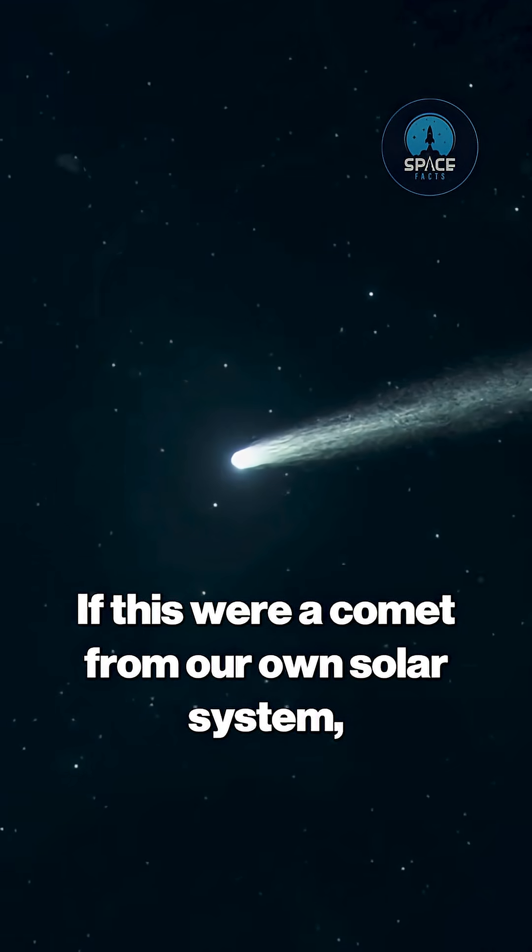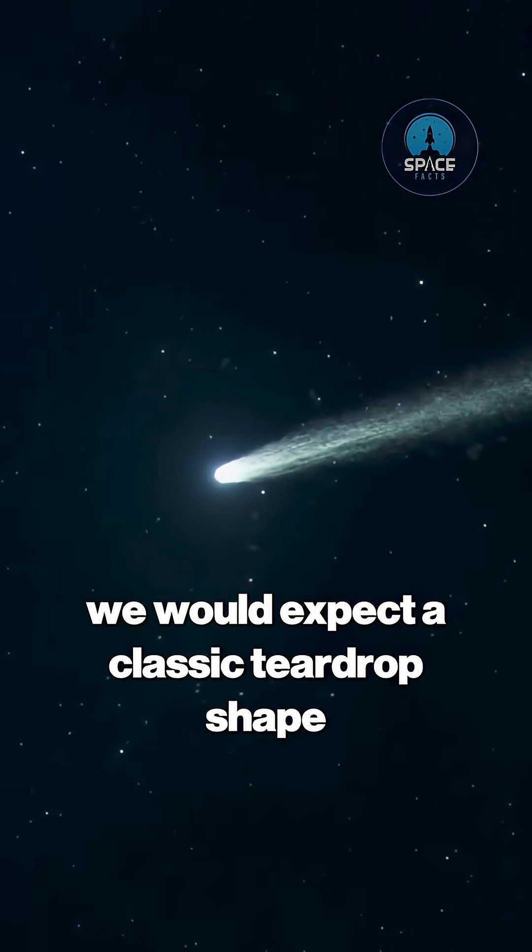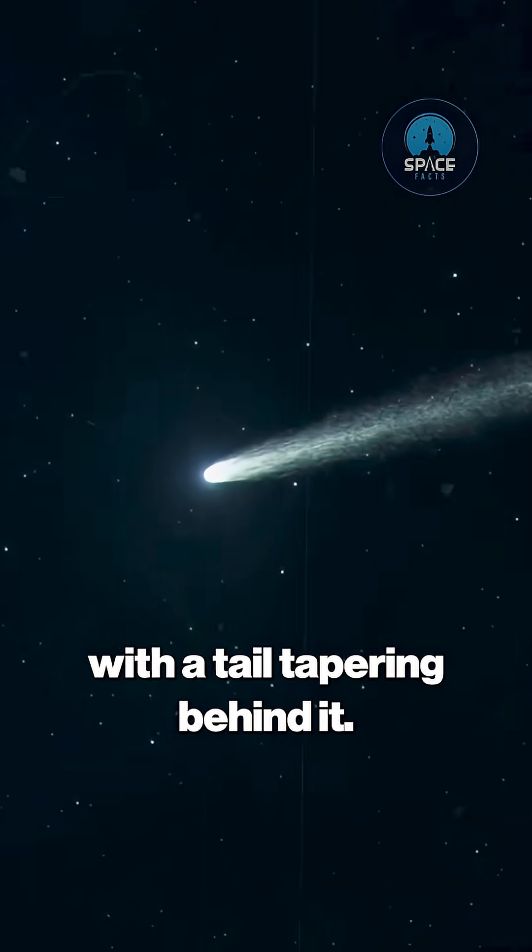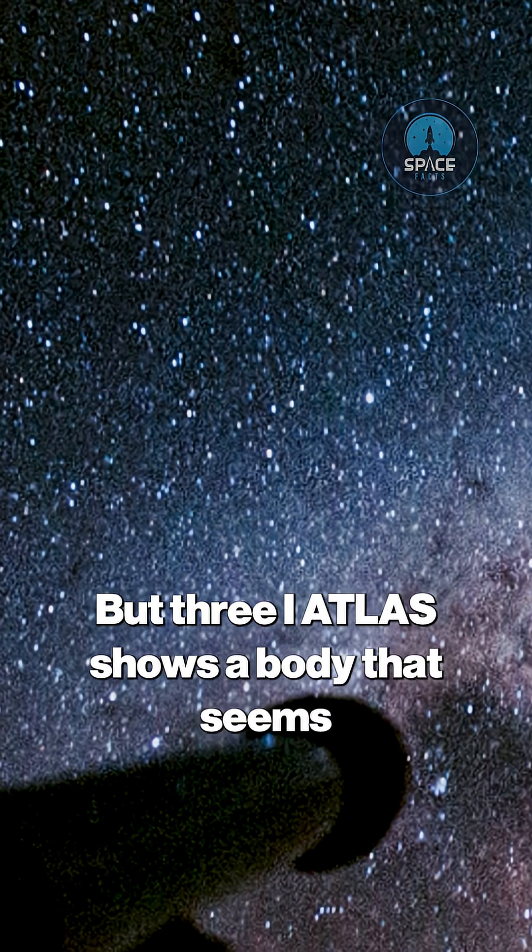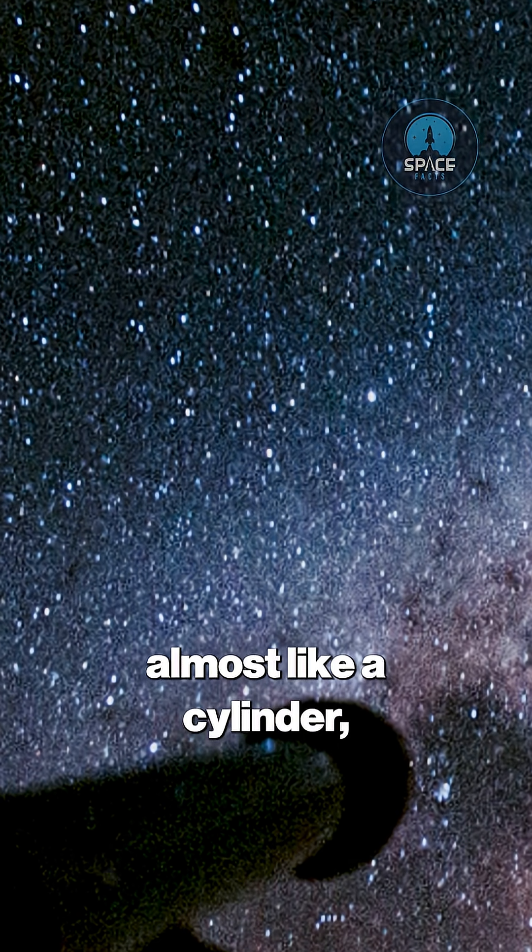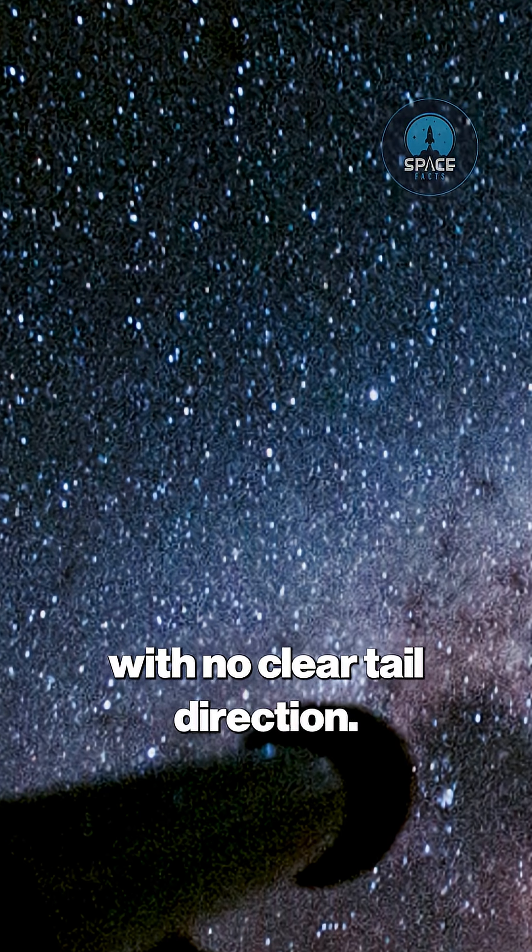If this were a comet from our own solar system, we would expect a classic teardrop shape with a tail tapering behind it. But 3I ATLAS shows a body that seems evenly stretched, almost like a cylinder, with no clear tail direction.